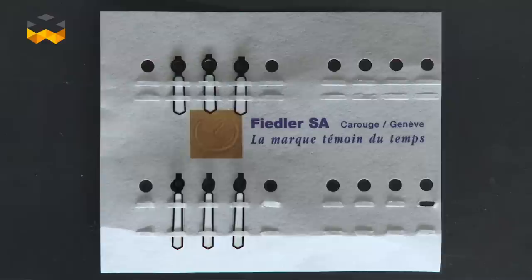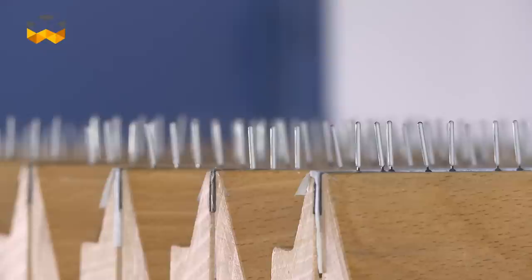But what is important to remember is that 30 operations are necessary to create a hand. And in those 30 operations, two thirds of them are made manually by the operators of the factory.